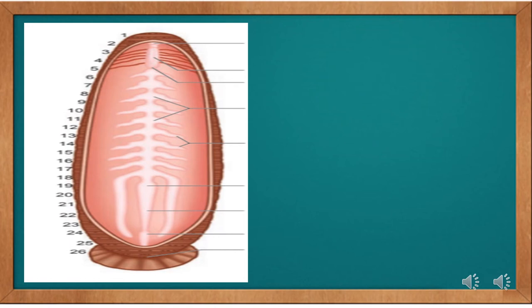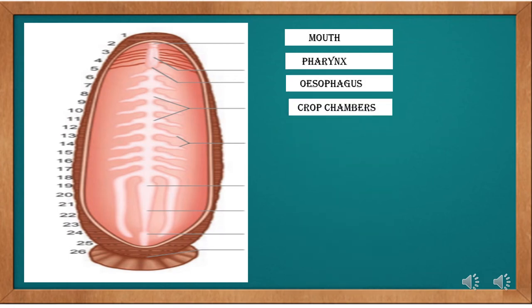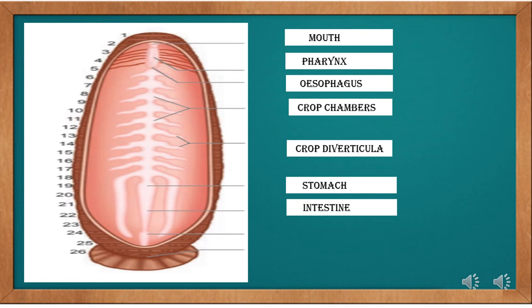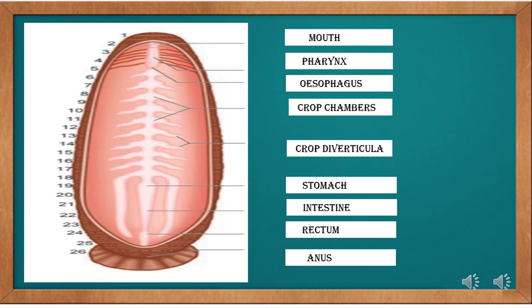Now let's do a class activity. You have a diagram and you have to identify the different organs of the alimentary canal in the leech. The answers are: first, mouth; second, pharynx; third, esophagus; fourth, crop chambers; fifth, crop diverticula; sixth, stomach; seventh, intestine; eighth, rectum; ninth, anus.